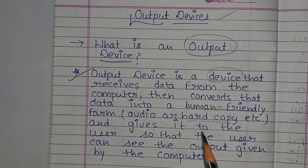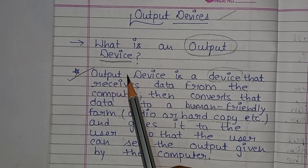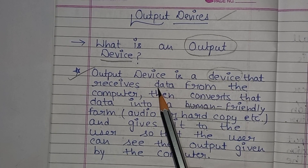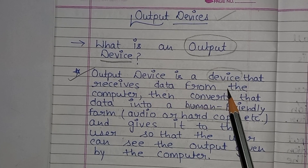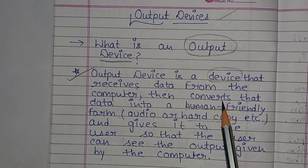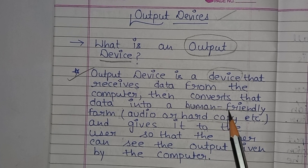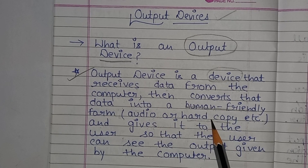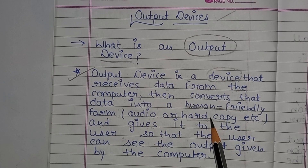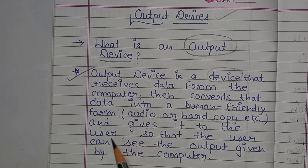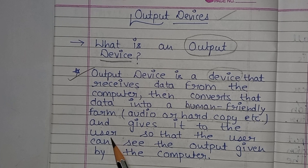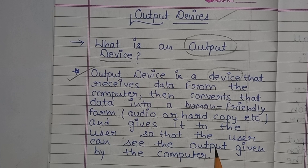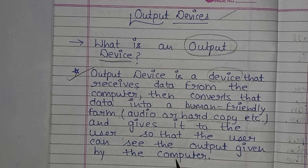The output device is the device that receives data from the computer and converts that data into a human-friendly form, whether it is in audio or hardcopy form, so that the user can see the output given by the computer.